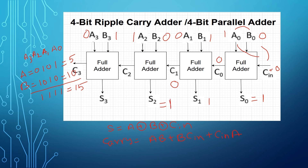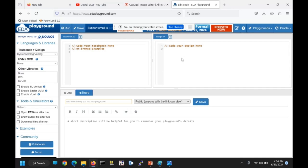Similarly for S2: A2 XOR B2 XOR C1 gives sum equal to 1 and carry C2 equal to 0. For S3: 0 XOR 1 XOR 0 gives 1, and carry C3 is 0. In this way we add two 4-bit numbers using a ripple carry adder.